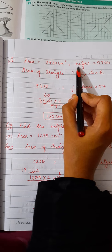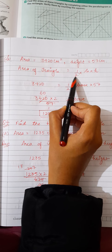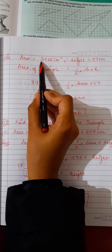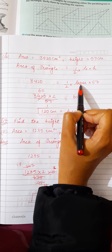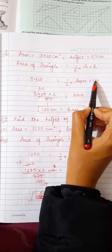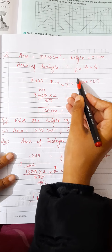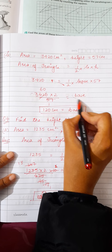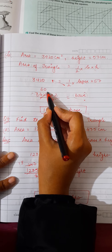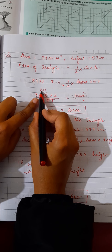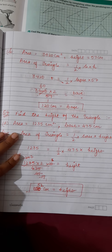Part B: area is given as 3420, height is 57, find the base. Area = half × base × height, so 3420 = half × base × 57. Rearranging: base = (2 × 3420) / 57. Cancelling gives the base as 120 centimeters.